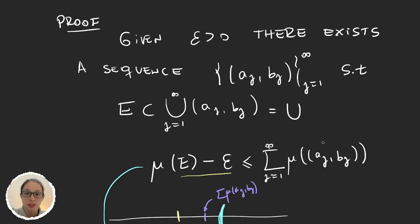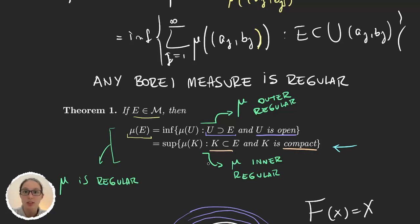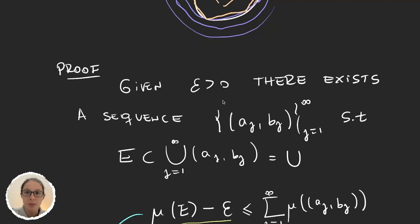Now we have to prove the second part. The proof is quite long and a bit more tedious, but if you stay with me you will learn a lot of tools, because we will be working with the definition of a supremum and concepts of topology. It is very useful to understand this proof because it will give us tools for exercises later. We have to prove that mu(E) is the supremum over compact subsets of E of their measures. We will divide the proof into two parts.